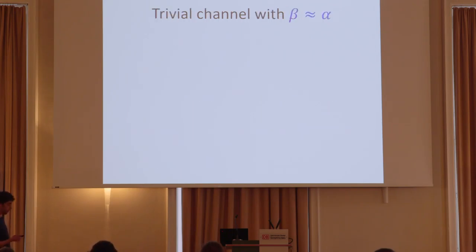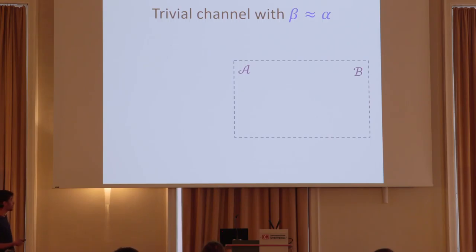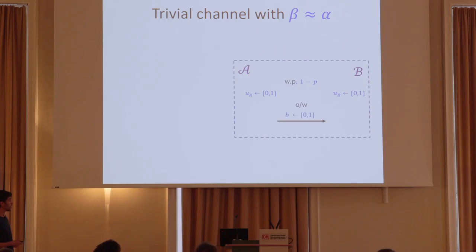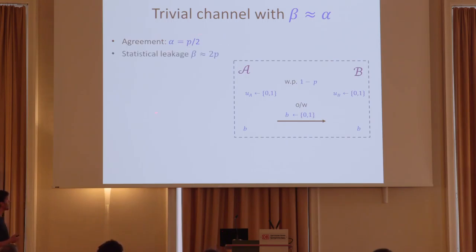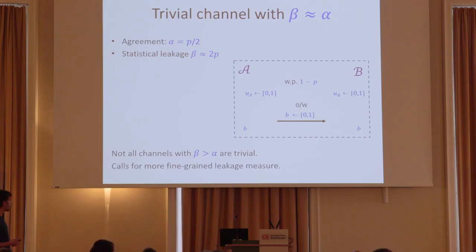For example, we have a trivial channel in which the agreement and the leakage are of the same order. In this protocol, with probability 1 minus P, Alice and Bob output two independent bits. Otherwise, Alice samples a bit, sends it to Bob, and both output this common bit B. The agreement in this protocol is P over 2 and the leakage is 2P, so they are the same order. But this doesn't mean any channel with the same agreement and leakage is trivial — maybe there is another channel with the same parameters that can be amplified into OT. So we want a more fine-grained leakage measure.